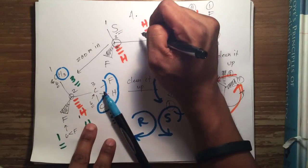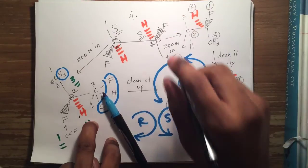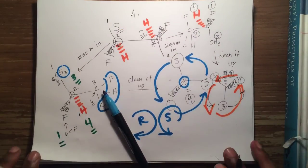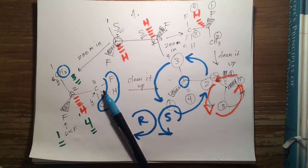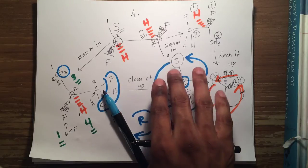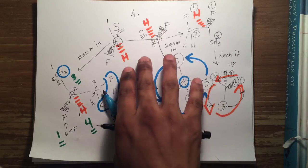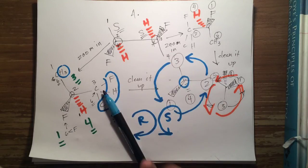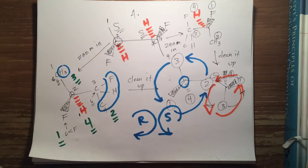We've almost finished this problem. Both chiral centers are S configuration. The one remaining step is to draw the epimer of this molecule. Before we can do that, we need to redraw it cleanly. We'll continue with this problem in the next video.